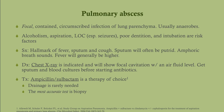A pulmonary abscess is a focal, contained, circumscribed infection of the lung parenchyma, usually caused by anaerobes. Risk factors include alcoholism, aspiration, loss of consciousness, and seizures. Symptoms include the hallmark triad; the sputum will often be putrid due to the anaerobes. You can hear amphoric breath sounds, and the fever is generally higher than in pneumonia. Chest x-ray shows focal cavitation with an air-fluid level. Get sputum and blood cultures before antibiotics. Treatment is ampicillin-sulbactam. Drainage is rarely needed; the most accurate test is biopsy though we rarely do it.